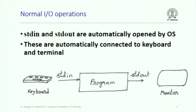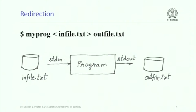By default, stdin is connected to the keyboard and stdout is associated to the monitor — this happens automatically. That is why whenever you say cin >> something, the operating system reads the stream of bytes from your keyboard and hands that particular line or record to your program. It is possible to reconnect stdin and stdout to some other files, not necessarily keyboard and monitor. This is called redirection.